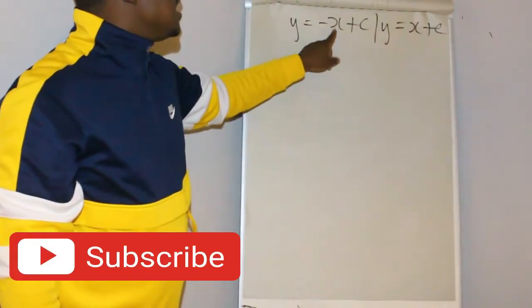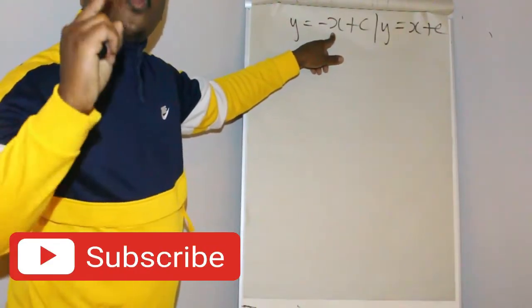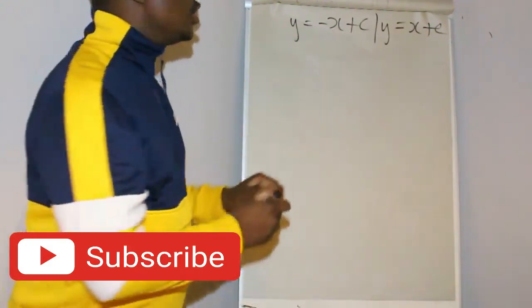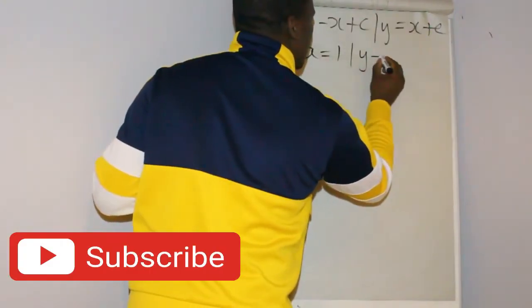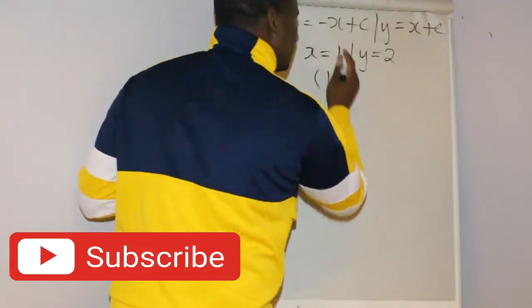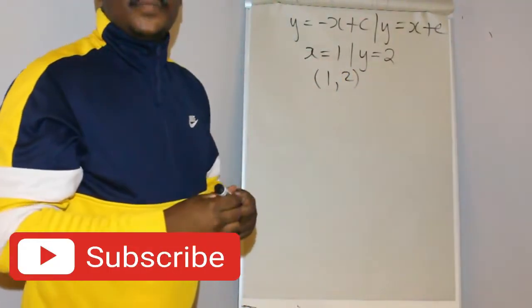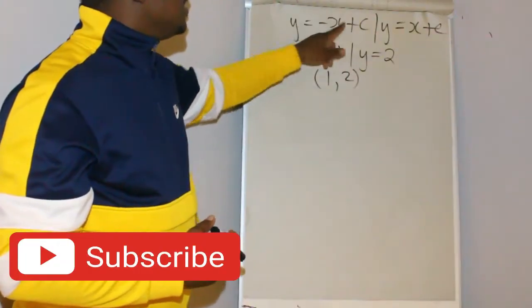So what it means is this line of symmetry passes through the point where your asymptotes meet. So your asymptotes: one was x equals 1 and the other was y equals 2. So this line of symmetry passes through 1 and 2. Now you have to find this equation. How do you do this?